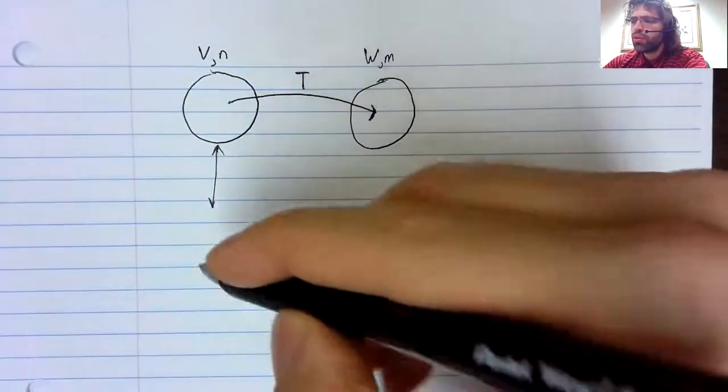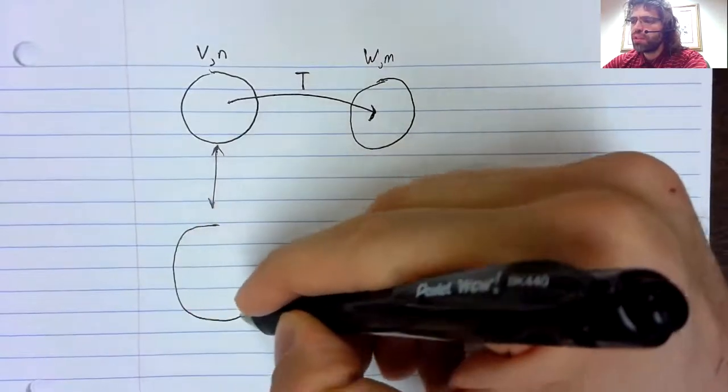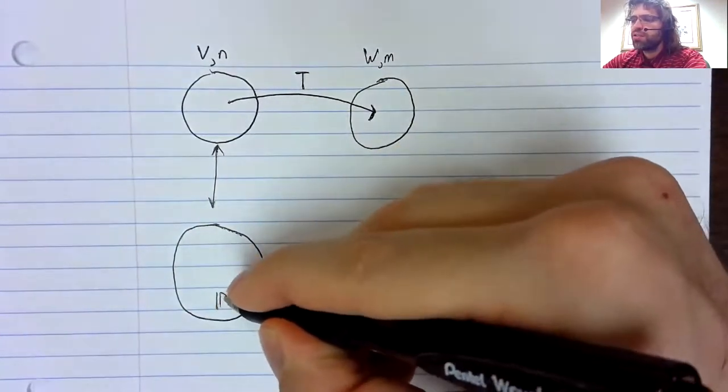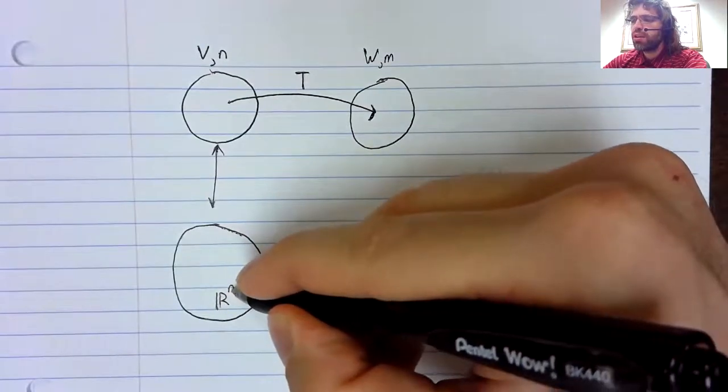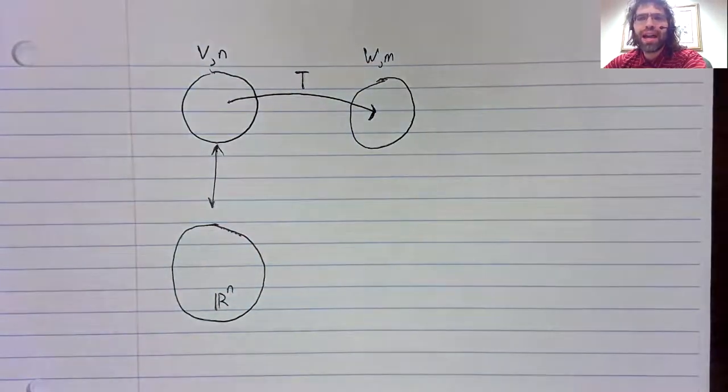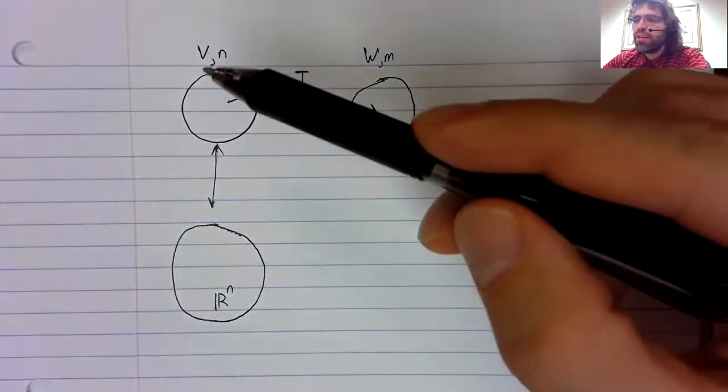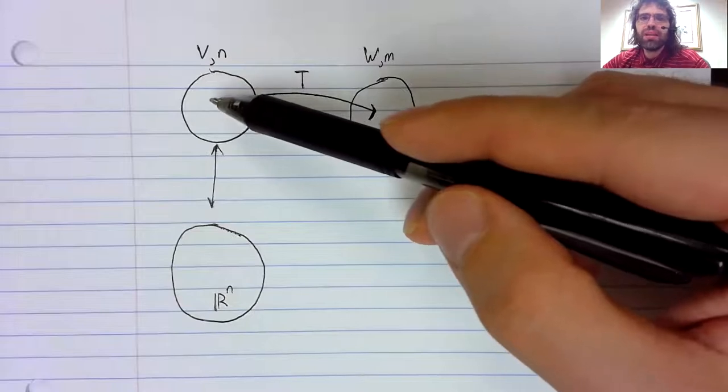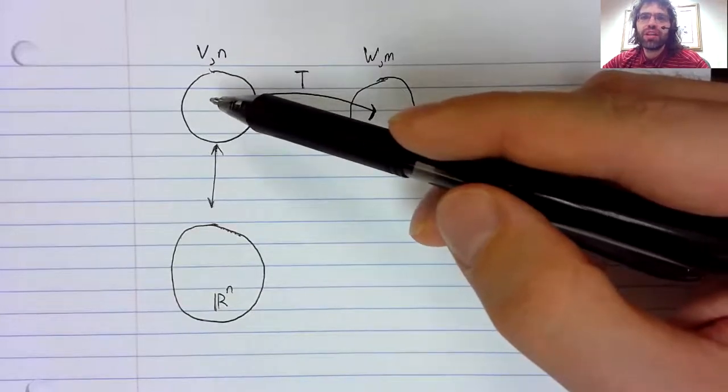An n-dimensional vector space is isomorphic to R^n. In particular, if you have any basis B of V.